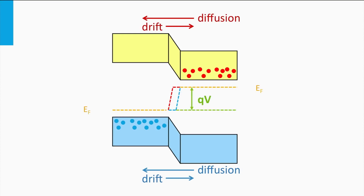The energy gap between both quasi-Fermi levels is q times v, in which q is the charge of electrons and holes, and v represents the forward bias applied on the junction. Due to the reduced field, or in other words the reduced slope, the drift of electrons and holes is reduced. In addition, the reduced width of the depletion zone enhances the diffusion.